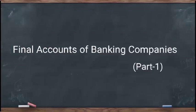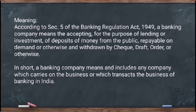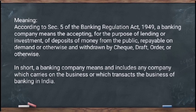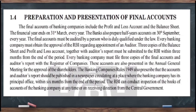In this video, we'll take up the next chapter of Financial Accounting 6, that is Final Accounts of Banking Companies. According to Section 5 of the Banking Regulation Act 1949, a banking company means the accepting, for the purpose of lending or investment, of deposits of money from the public, repayable on demand or otherwise, and withdrawn by cheque, draft, order, or otherwise. In short, a banking company means any company which carries on the business of banking in India.